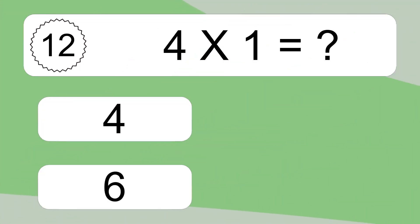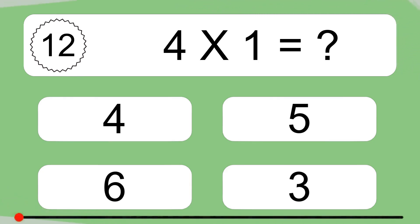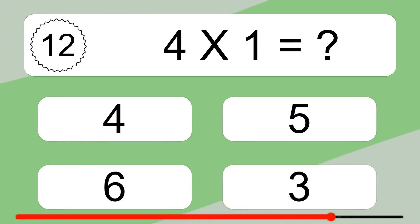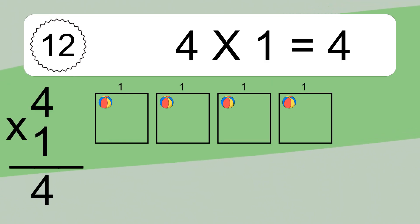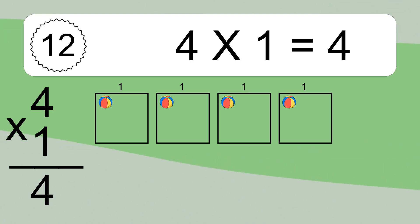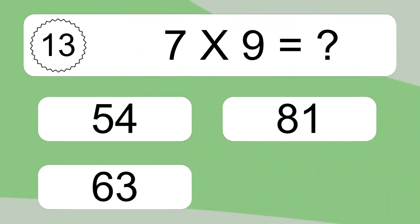Five times one equals what? Five times one equals four. We have four boxes and each box has one colorful ball inside. If you count all the balls in all the boxes together, you will have four times one balls. This equals four balls.